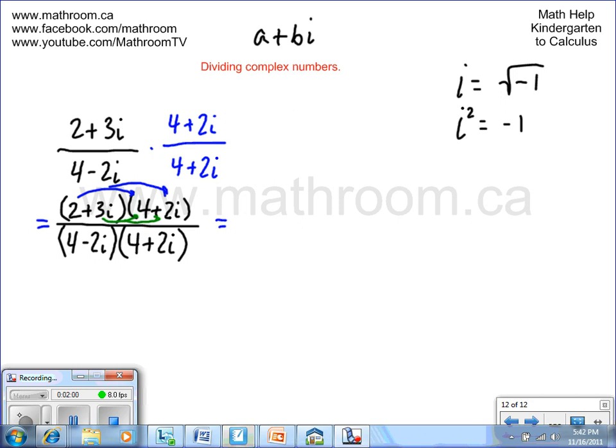We're going to do it step by step here. 2 times 4 is 8. 2 times 2i is plus 4i. Now we're going to distribute the 3i. Plus 3i times 4 is plus 12i. Plus 3i times plus 2i is plus 6i squared.